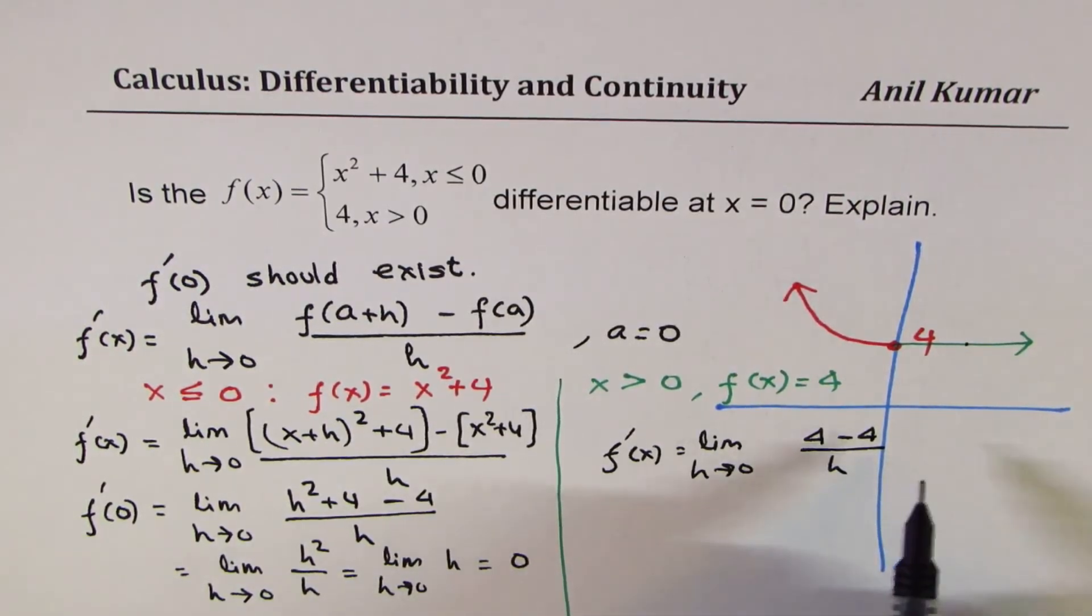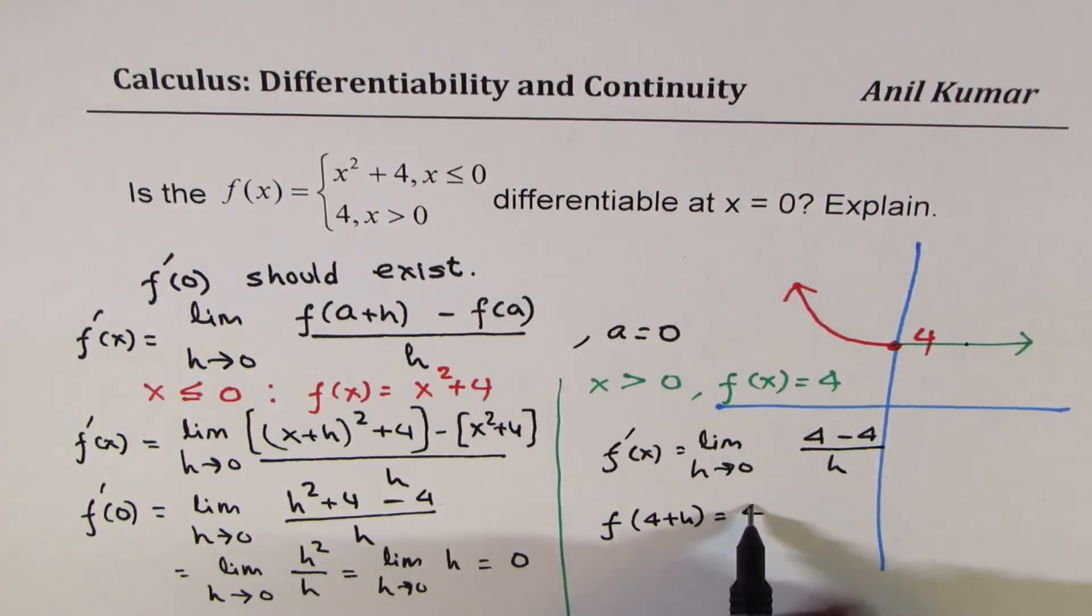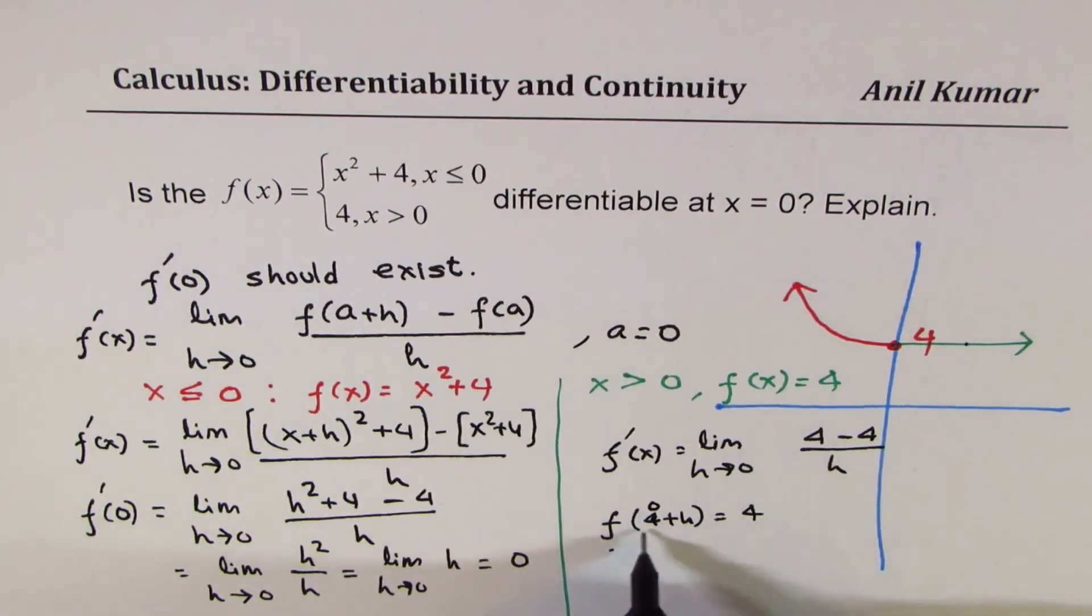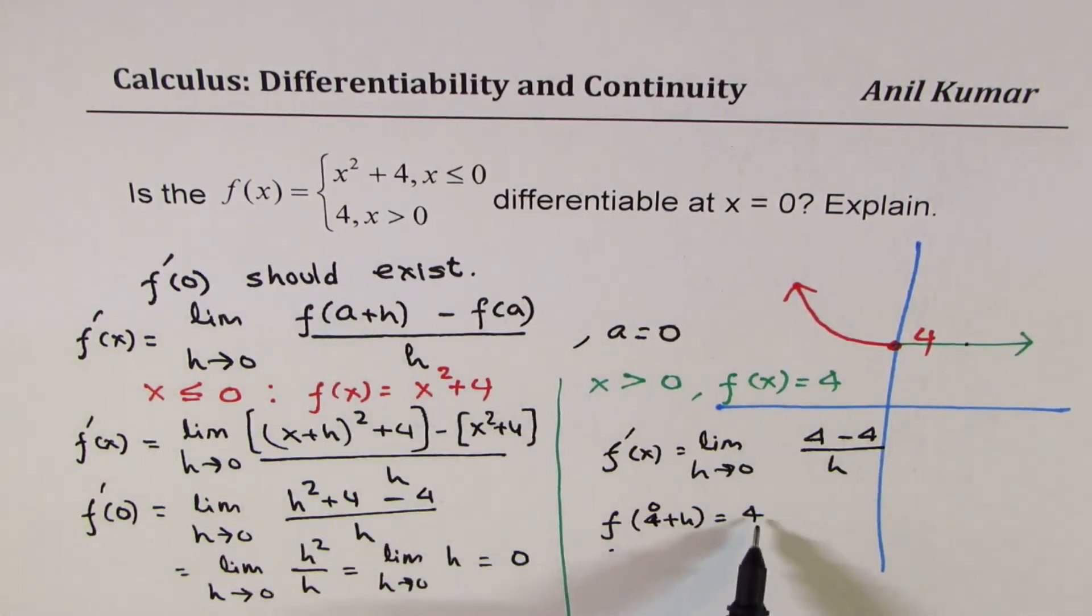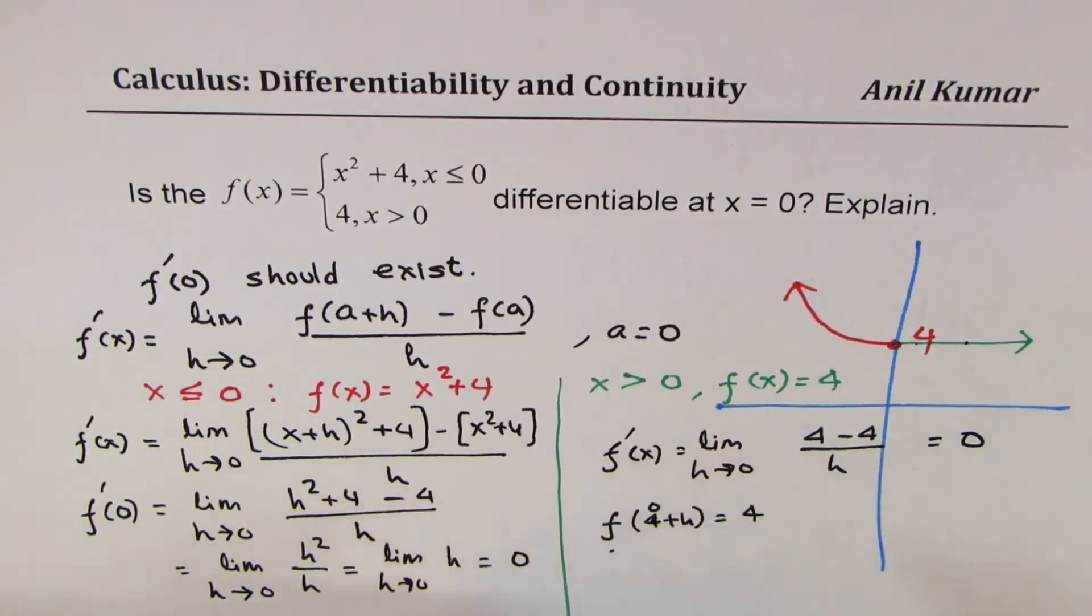Because in this case, as you can see, f(0 + h) is also equal to 4. Perfect. That is why this is constant. So 0 + h is 4. If a is 0, it is 4. At every place it is 4. So this is equal to 0.